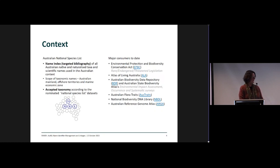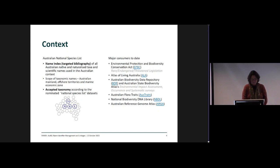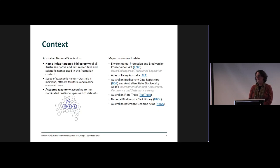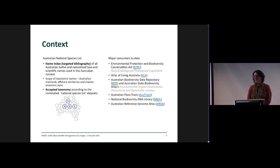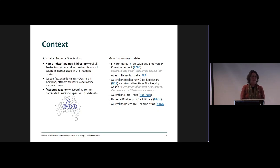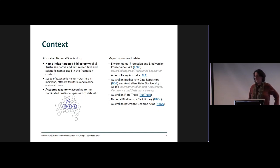For some context, for those that haven't come across the Australian National Species List before: we provide an infrastructure to deliver two main products. One is a names index, which is like a bibliography of citations for taxonomic names and usages. And then an accepted taxonomy that is used as the backbone for a number of national species projects, including the Atlas of Living Australia, our Environmental Protection and Biodiversity Conservation Act, and Austrates, which is a traits database for Australian vascular flora.